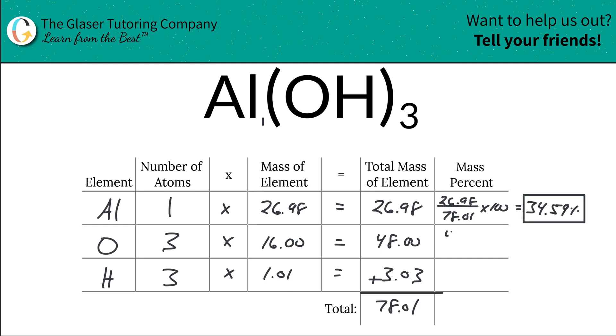For oxygen, it's going to be then the 48 over then the 78.01. Multiply that by 100. We're going to come up with now a percentage of about 61.53. All right. And then last but not least, let me make the box a little neater.